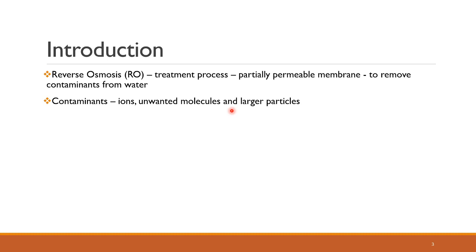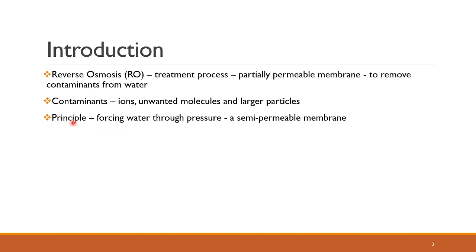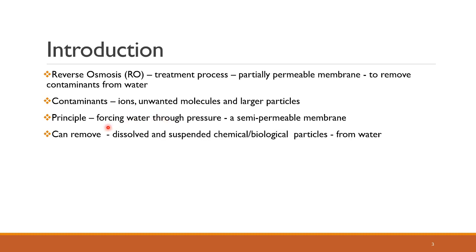Basically you get clean water at the end of the reverse osmosis process. The principle includes forcing the water by application of pressure across a semi-permeable membrane so that the impurities are retained on one side. This can be used to remove dissolved and suspended particles — that is any chemical or biological particle from water.